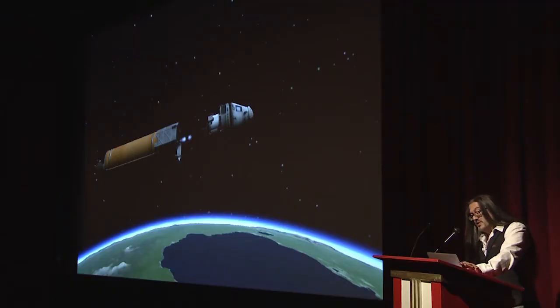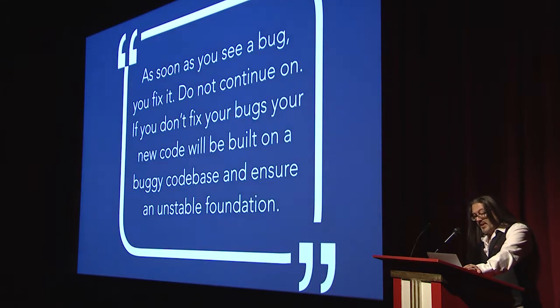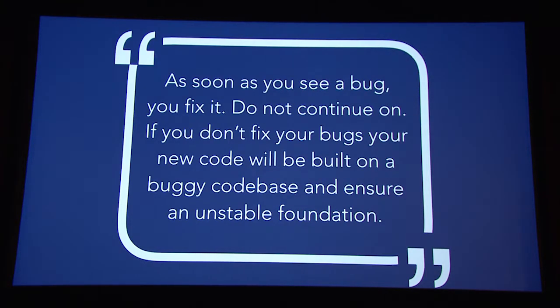After 1992, id Software's second stage of company development was complete, along with another principle: as soon as you see a bug, you fix it. You do not continue on. If you don't fix your bugs, your new code will be built on a buggy codebase and ensure an unstable foundation. If you check in buggy code, someone's going to be writing code based on your bad code, and you can imagine how much waste that creates.